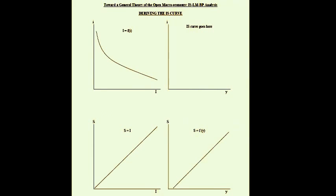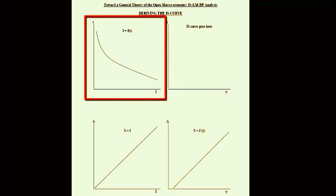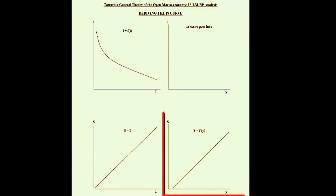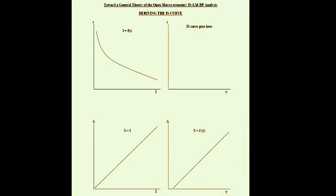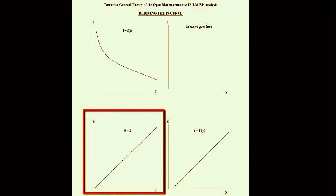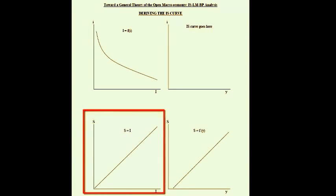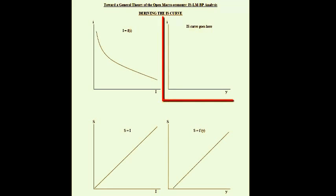We are interested in a graphical representation of this analysis and will start by deriving the IS curve. The IS curve — equilibrium in the real sector — comes from two main ideas: that investment is a negative function of interest rates (top left-hand panel) and that savings is a positive function of output. The third assumption is that domestic savings equal domestic investment, and when we put these variables together we get the IS curve.